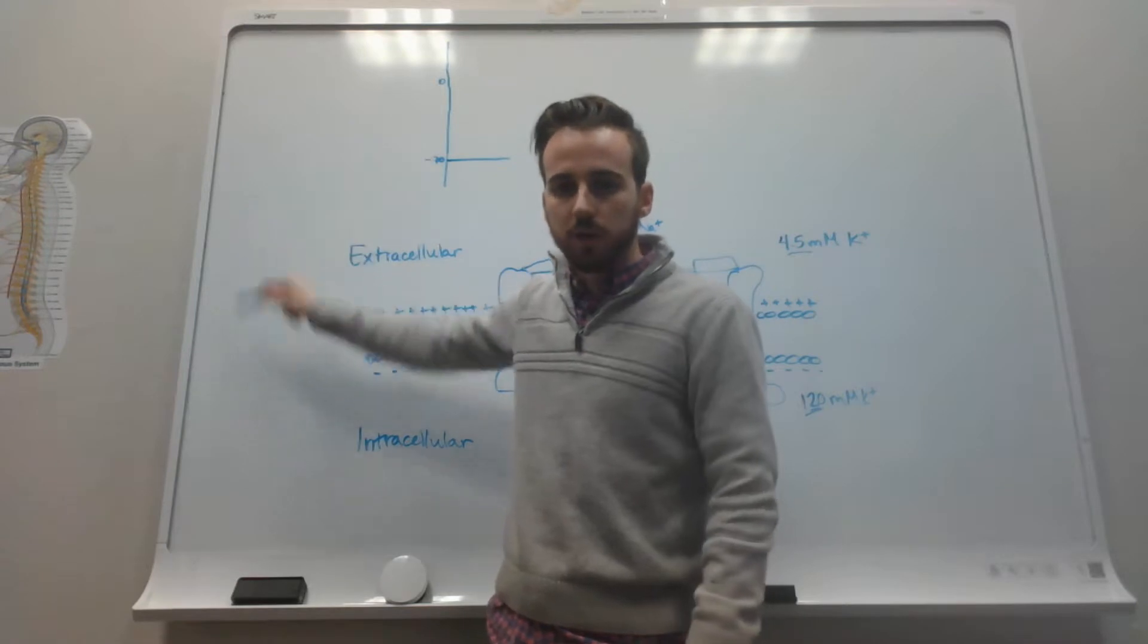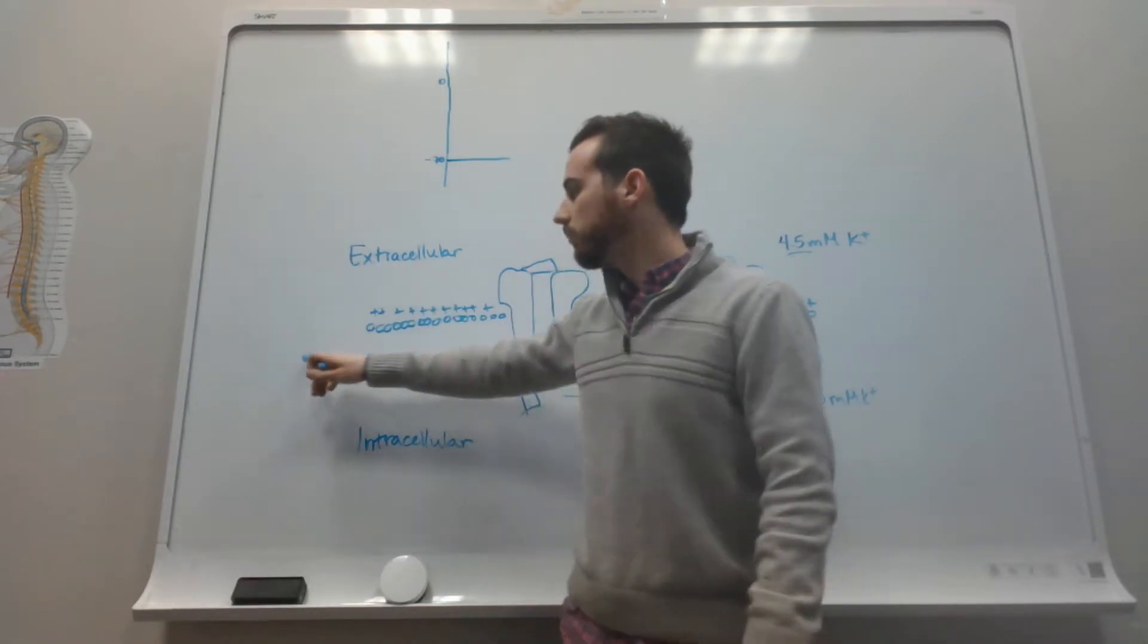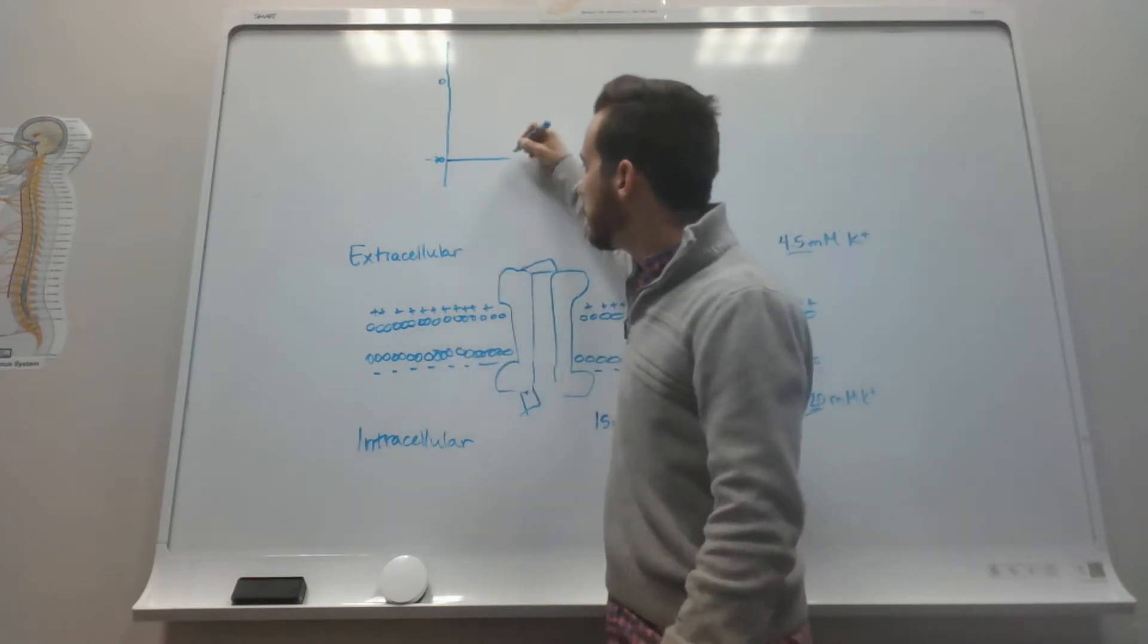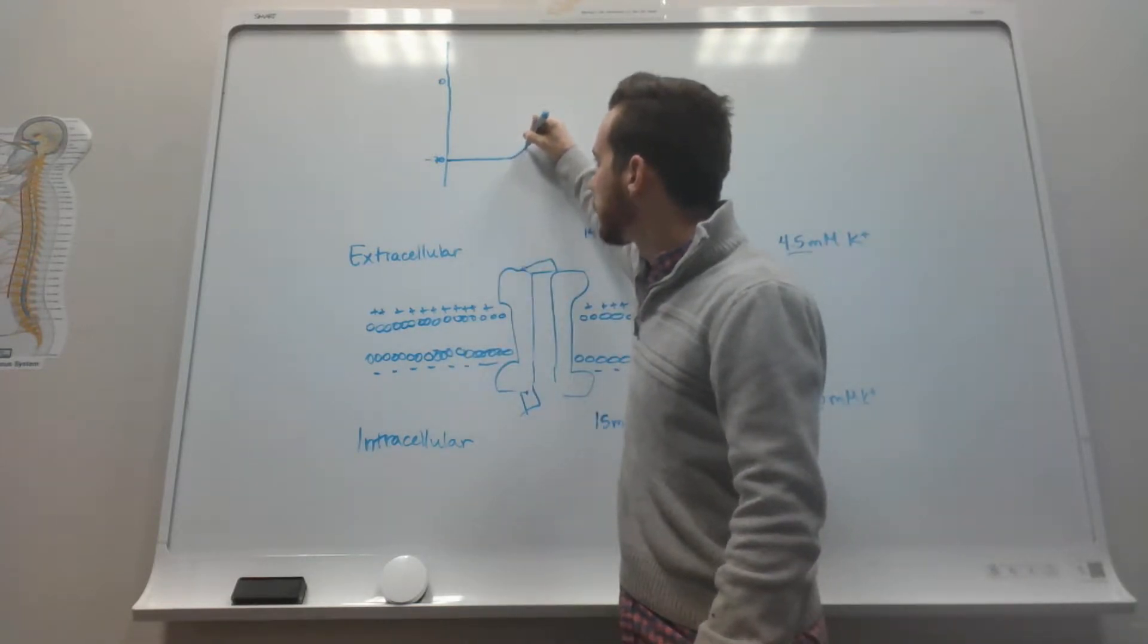Those positive ions flowed into the cell because of that signal, and they started to move down. As they move down, they depolarize the membrane.